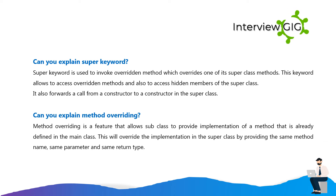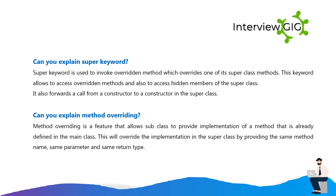Can you explain the super keyword? Super keyword is used to invoke an overwritten method which overrides one of its superclass methods. This keyword allows access to overwritten methods and also to access hidden members of the superclass. It also forwards a call from a constructor to a constructor in the superclass. Can you explain method overriding? Method overriding is a feature that allows a subclass to provide an implementation of a method that is already defined in the main class. This will override the implementation in the superclass by providing the same method name, same parameters, and same return type.